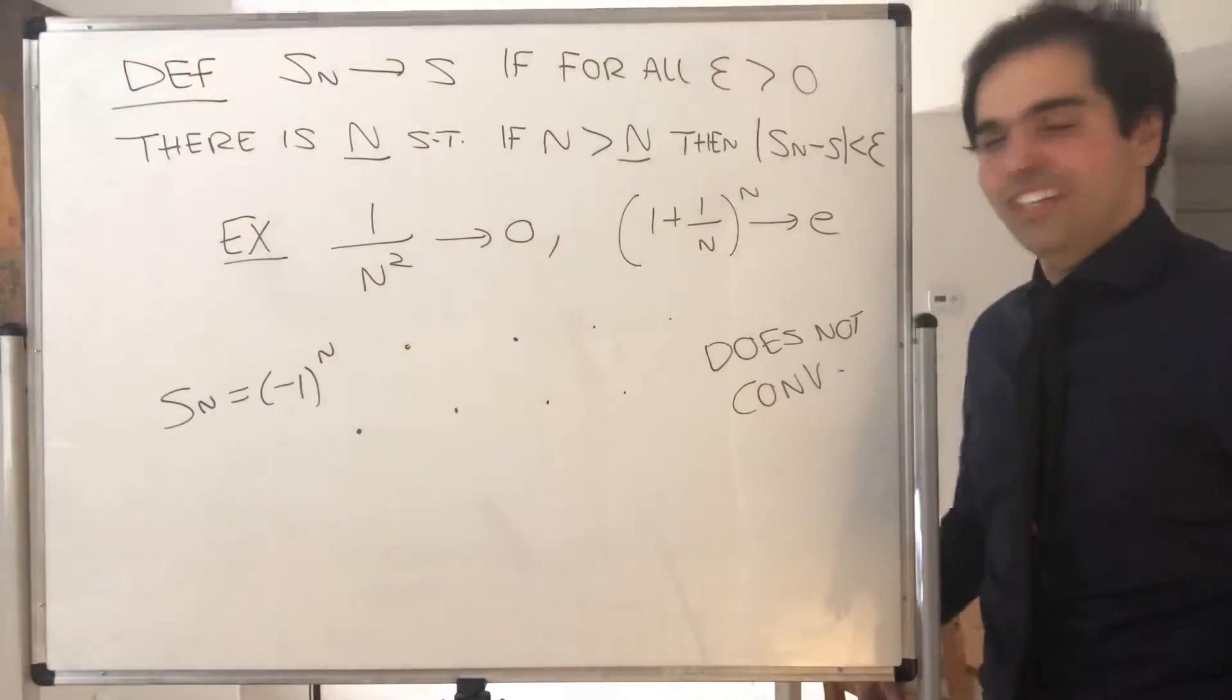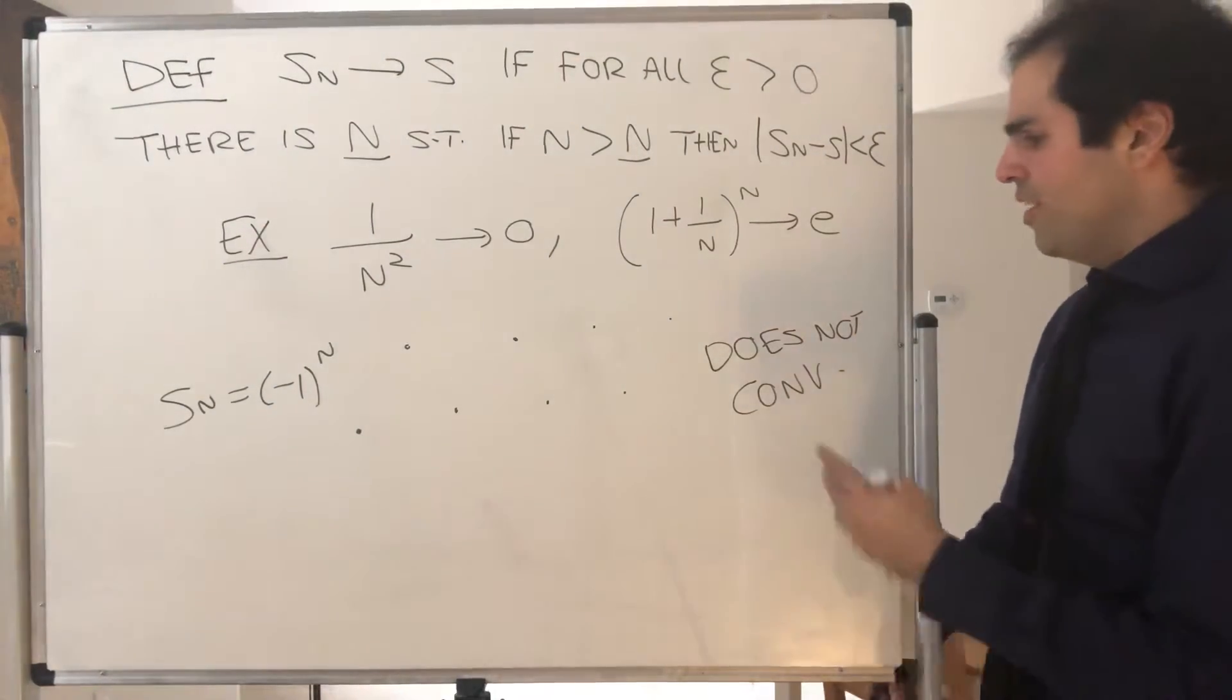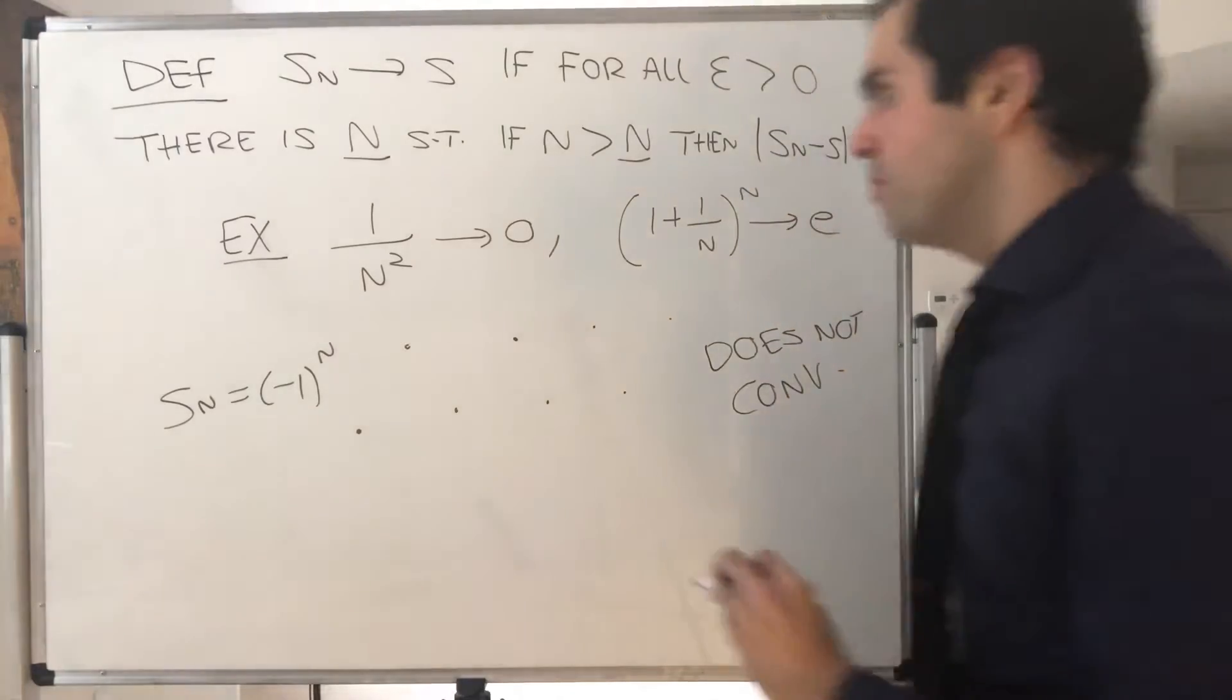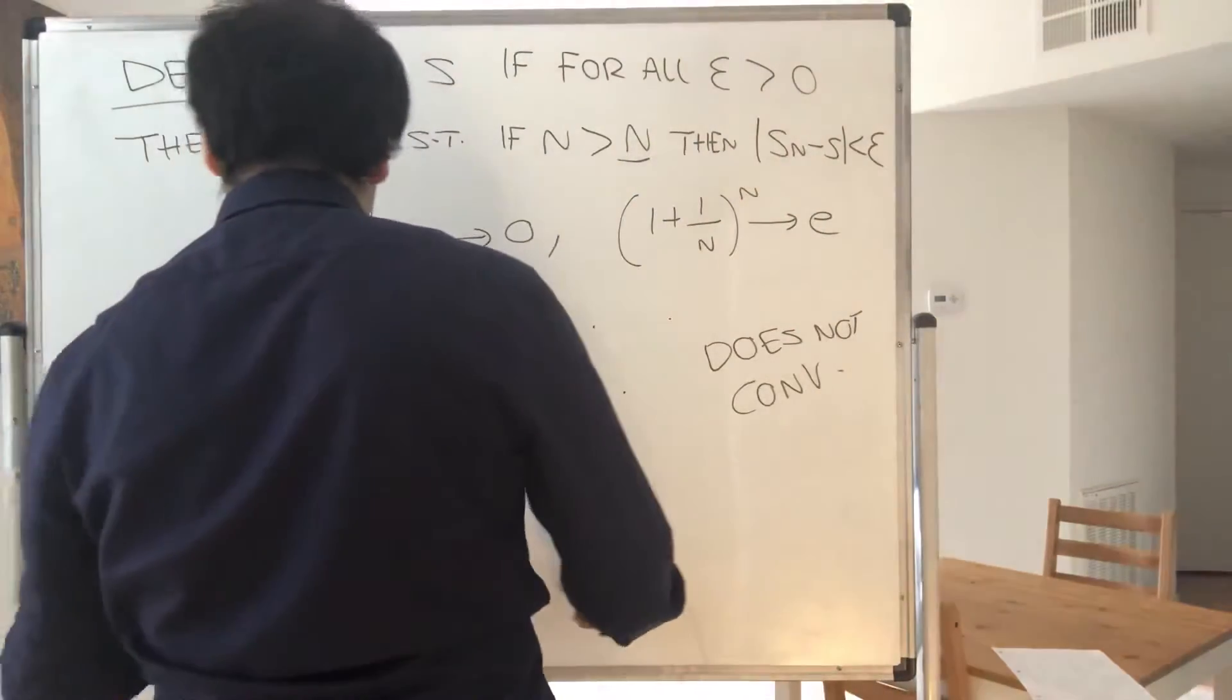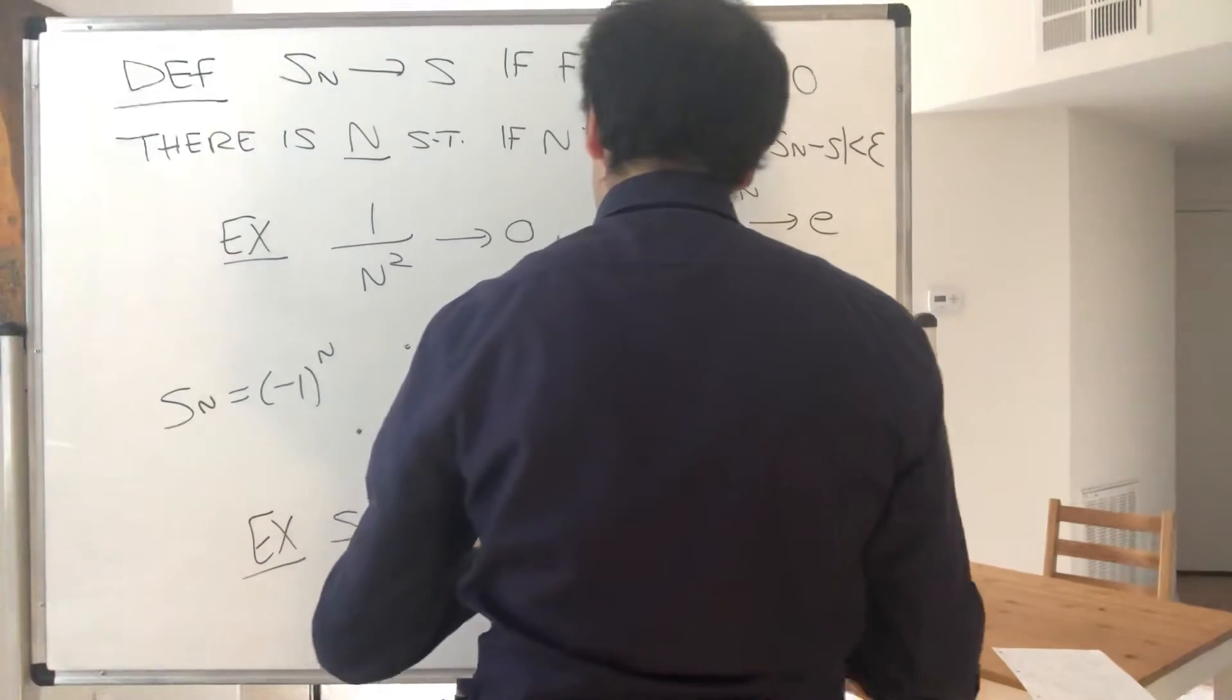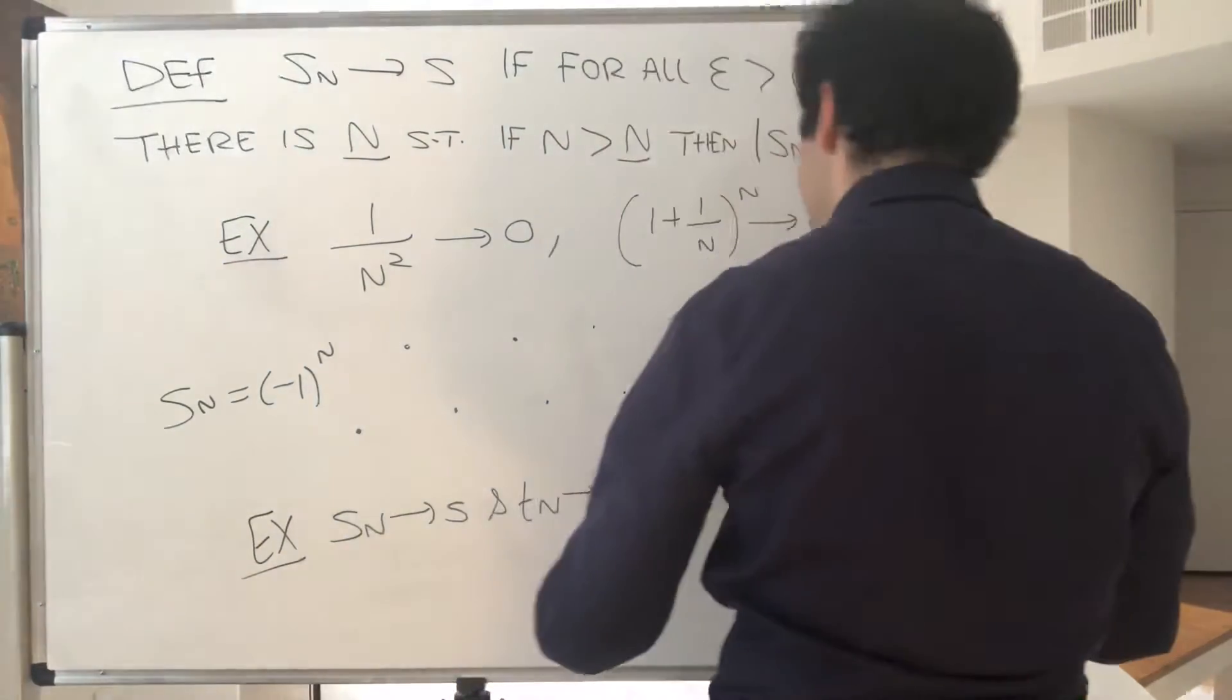Moreover, once we've seen that limit, we can also prove some limit laws, like if Sn goes to S and TN goes to T, then Sn plus TN goes to S plus T.